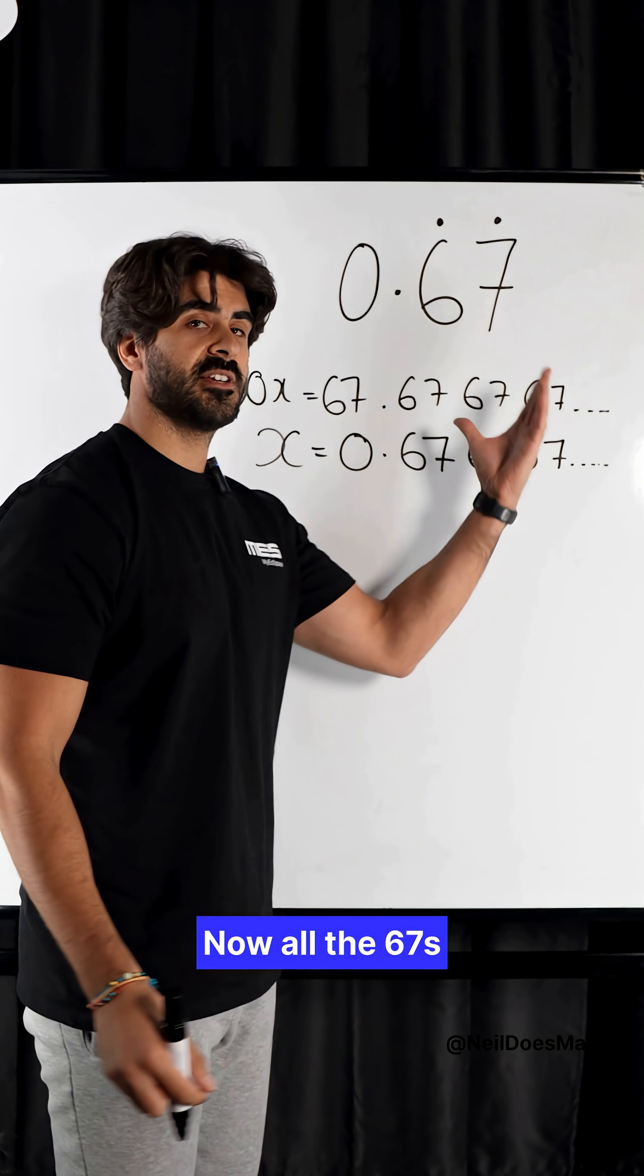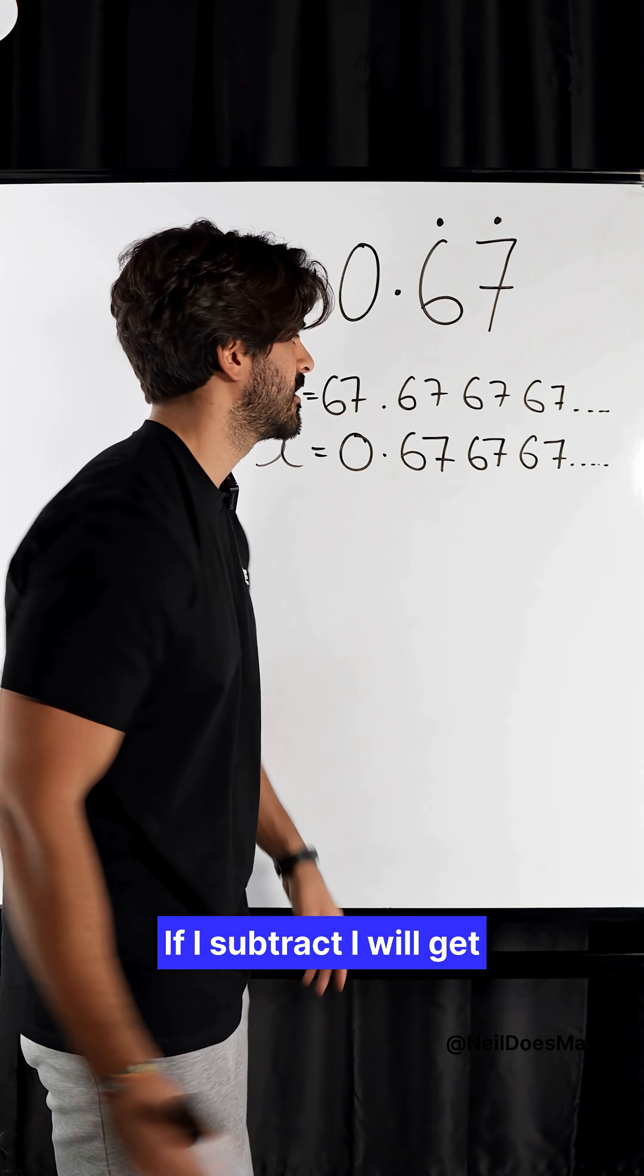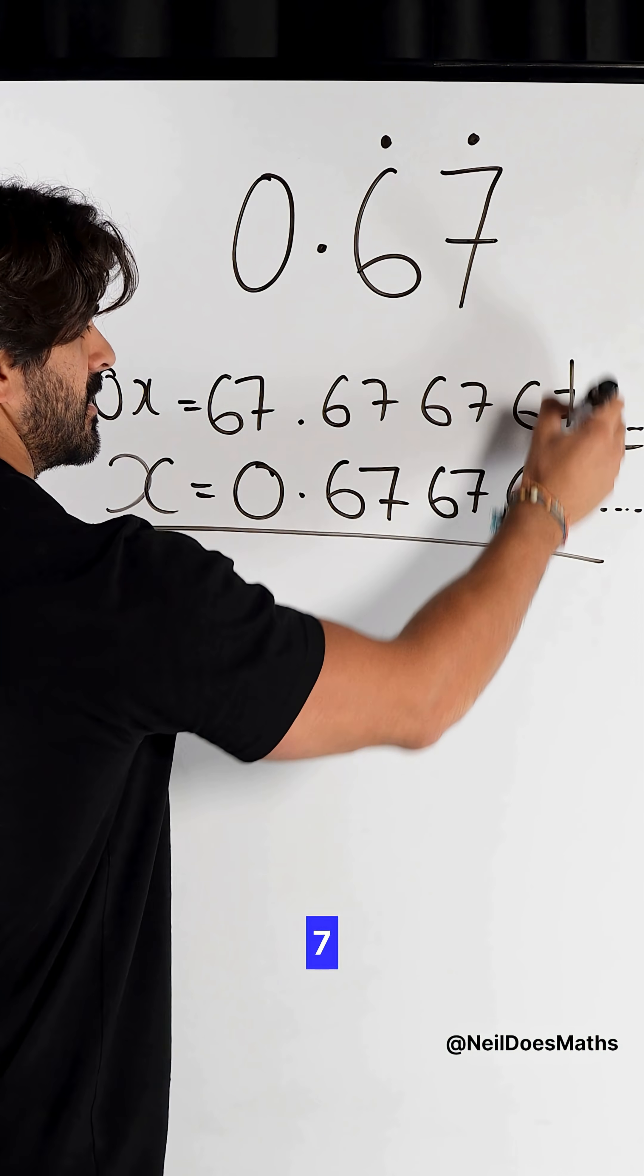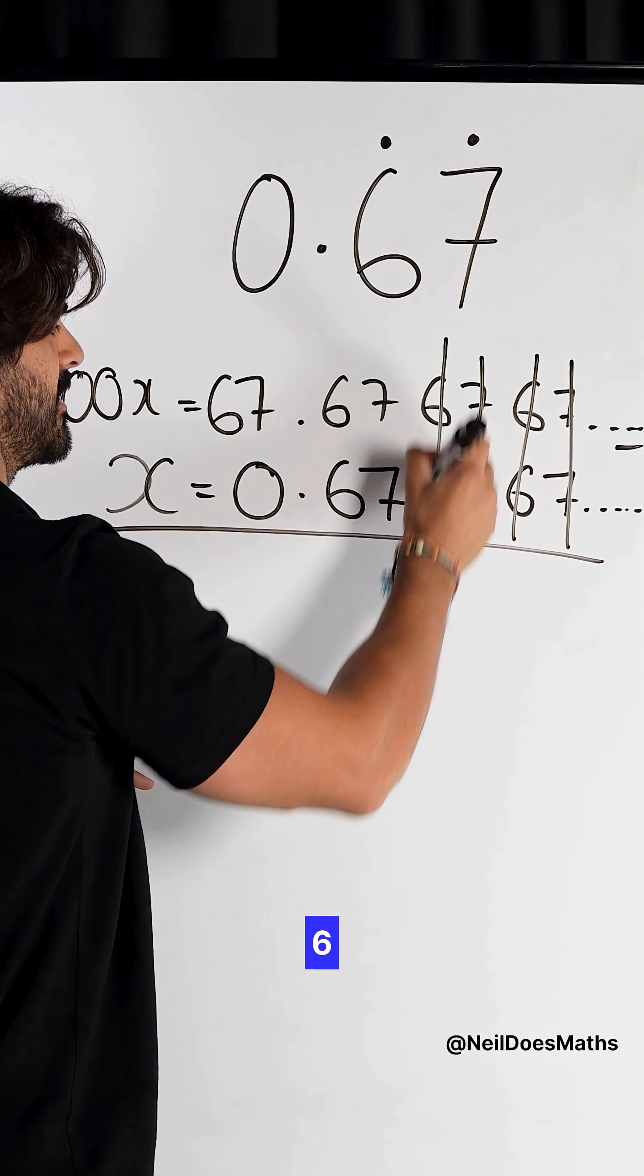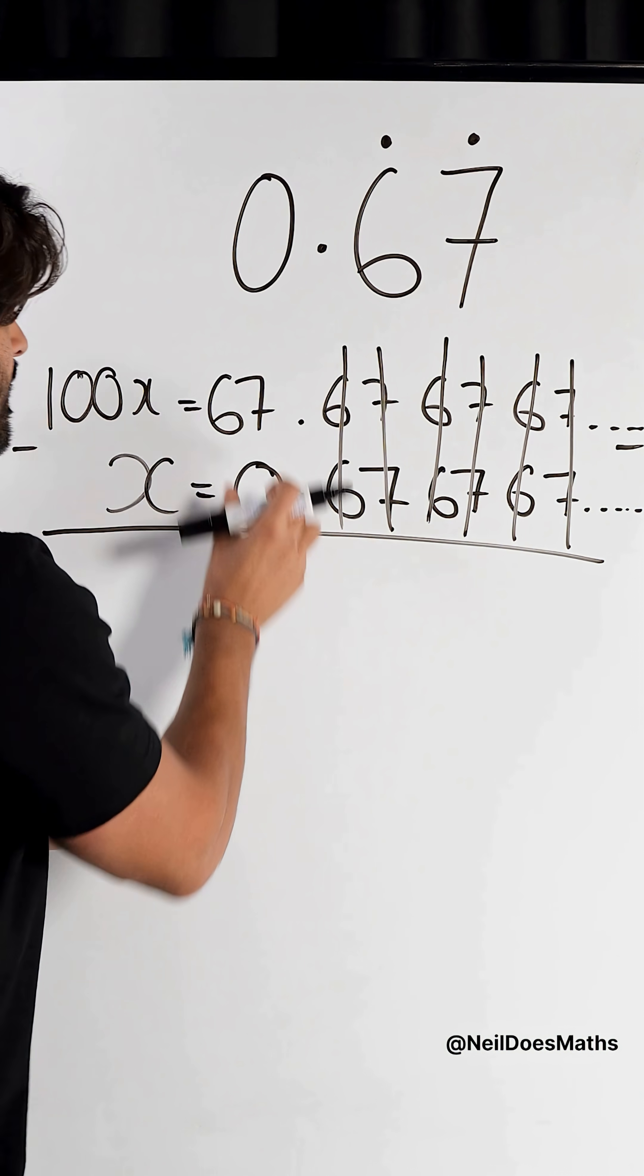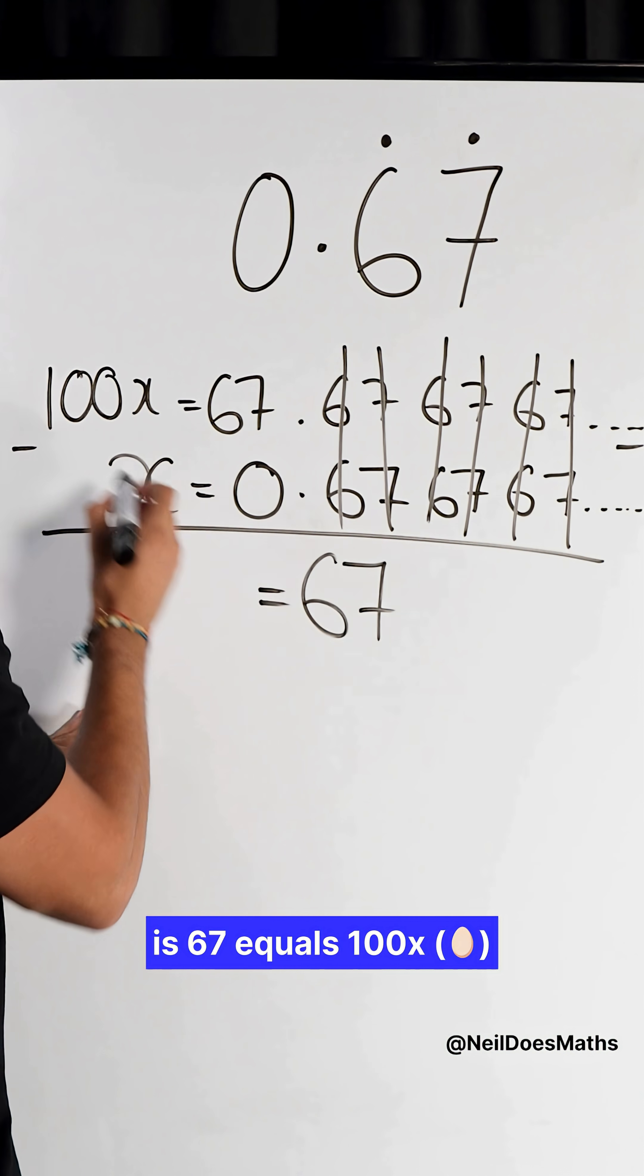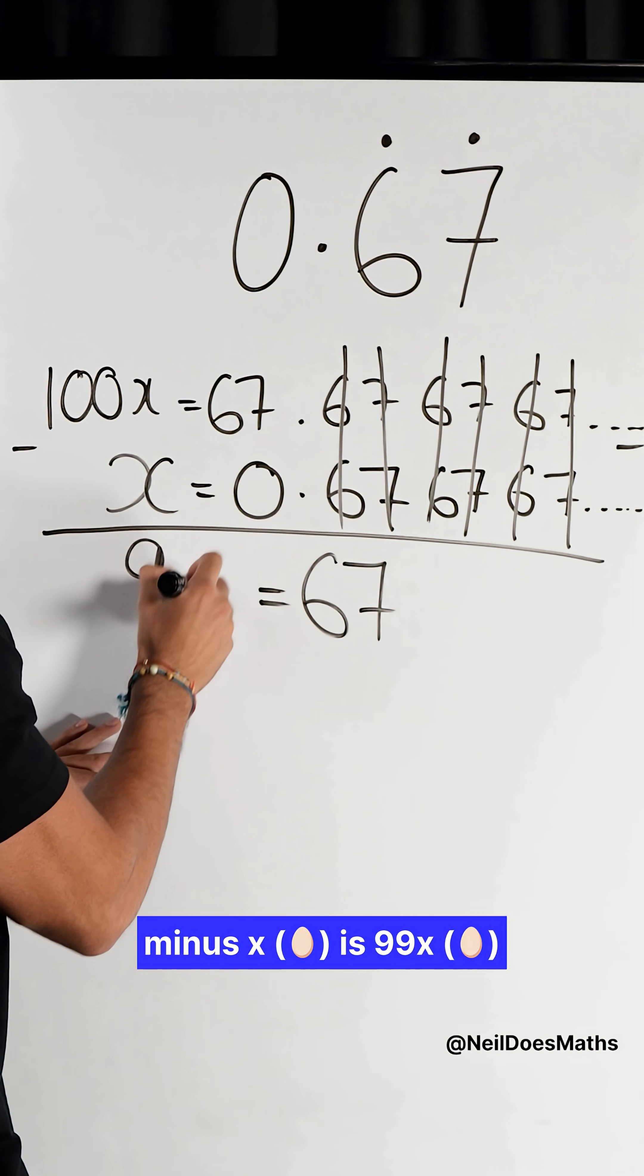Now, all the 6, 7s have lined up. If I subtract, I will get rid of that repeating decimal. 67.6767... minus 0.6767... equals 100X minus X is 99X.